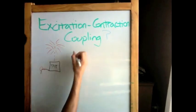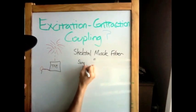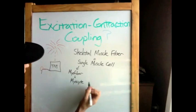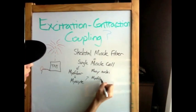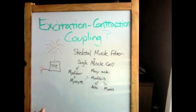Now remember, each skeletal muscle fiber is actually a single muscle cell. These muscle fibers are also known as a myofiber or a myocyte. These giant cells have many nuclei and their cytoplasm is packed with myofibrils. These myofibrils are bundles of protein filaments, either actin or myosin, that cause contraction.